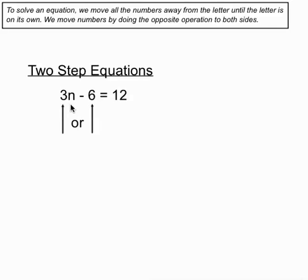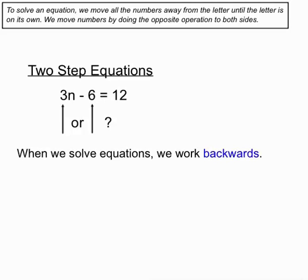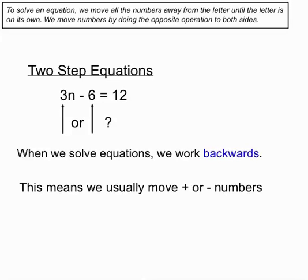We need to decide, we need to have a method whereby we decide which number to move first in our two-step equations. Because things have happened to the N, when we solve equations we consider ourselves to be working backwards. Normally the order of operations says you do multiplies and divides before you do pluses and minuses, but we're really retracing our steps to solve an equation.